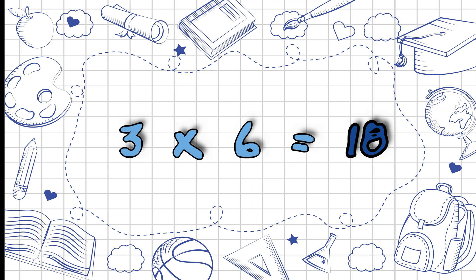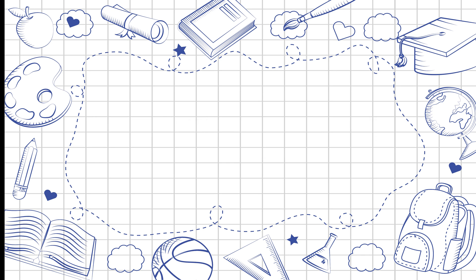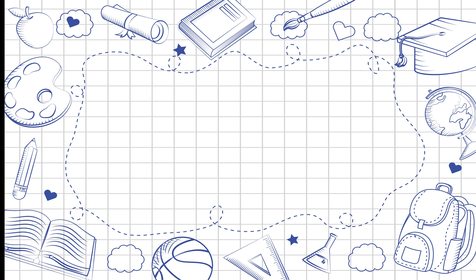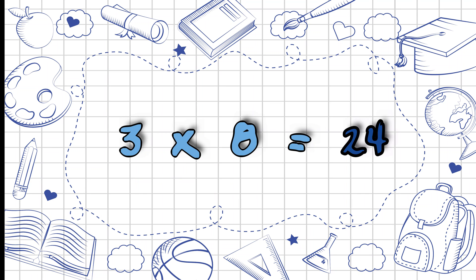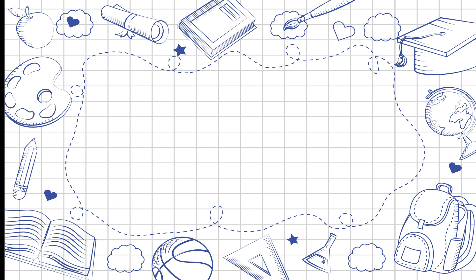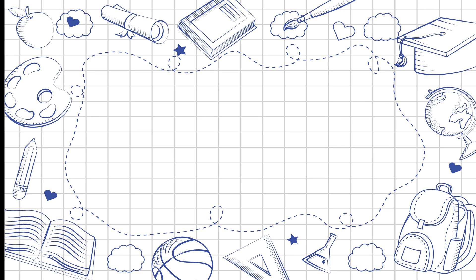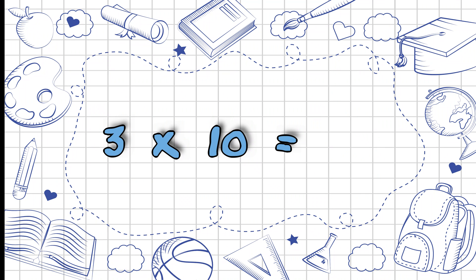3 6s are 18, 3 7s are 21, 3 8s are 24, 3 9s are 27, 3 10s are 30.